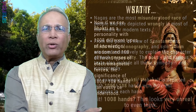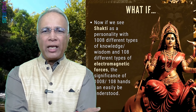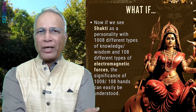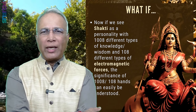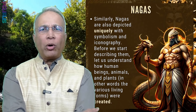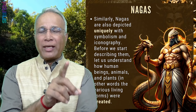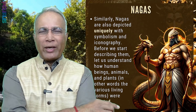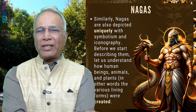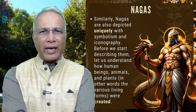1008 hands — that looks very unreal even to think about. Now if we think of Shakti as a personality with 1008 different types of knowledge and wisdom, and 1008 different types of electromagnetic forces, then the significance of 1008 or 108 could be easily understood. These are superhumans who had more than one characteristic trait. For example, why is Dashanan — not Dashasan, Dashanan — or Ravan, sometimes depicted with 10 heads? The guy was so brilliant and so good at so many things that it looked as if he had 10 heads.